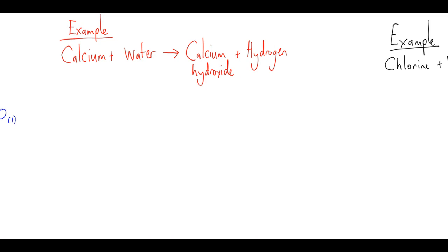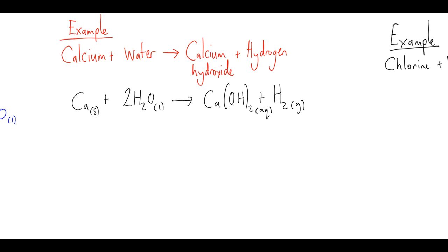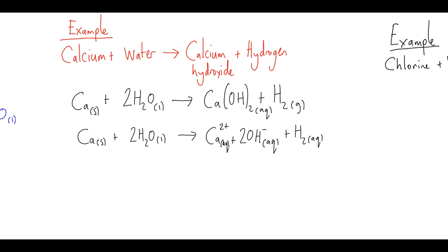For the second example, there's the balanced symbol equation. You should know that calcium is a solid, H₂O is a liquid, calcium hydroxide is aqueous, and hydrogen is a gas. This means the only species to split into ions is the calcium hydroxide, giving a calcium ion and two hydroxide ions: 2OH−. What we get is already the simplest ionic equation because there are no ions to cancel out on either side.